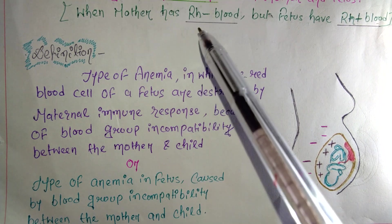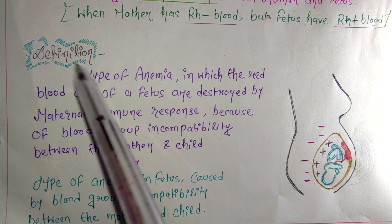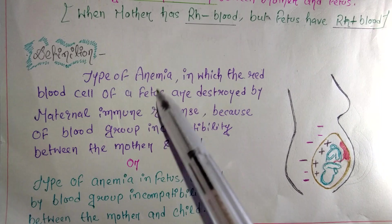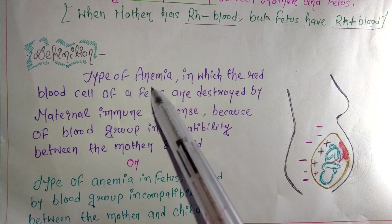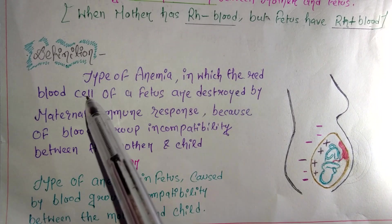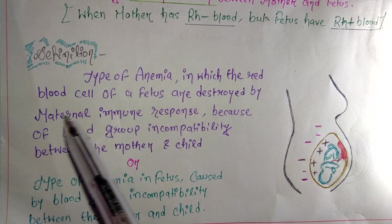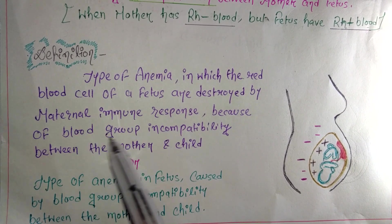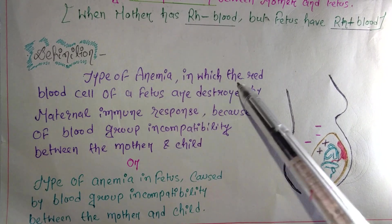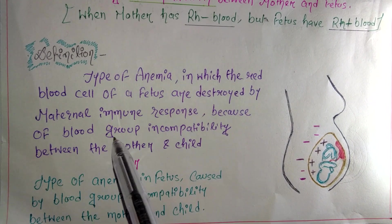The definition of RH incompatibility: it is a type of anemia in which the red blood cells of the fetus are destroyed by the maternal immune system — meaning the mother's immune system destroys the fetal RBCs.